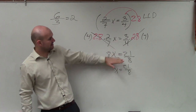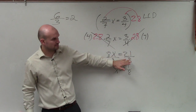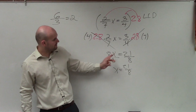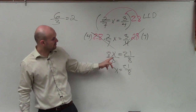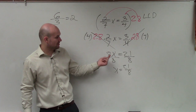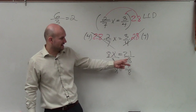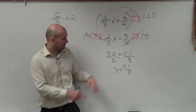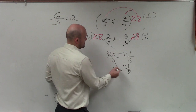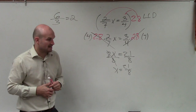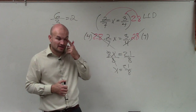Do you understand how I got to this part? My variable is being multiplied by 8. So to undo the multiplication, I divide by 8 on both sides. That divides out to 1 and I'm left with x equals 21 over 8.